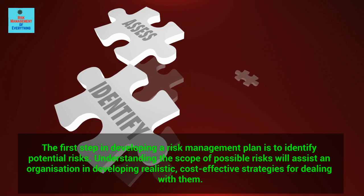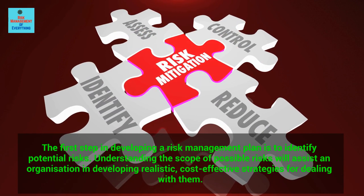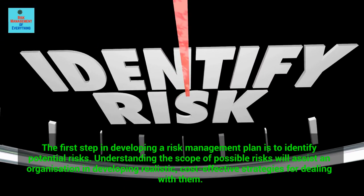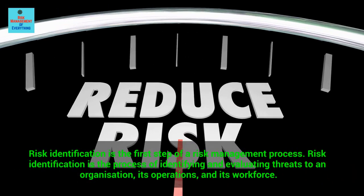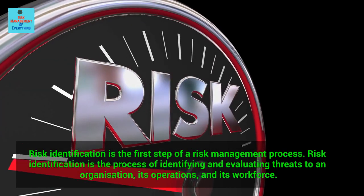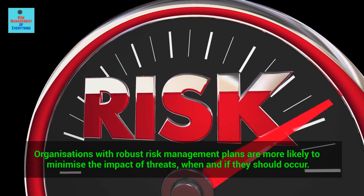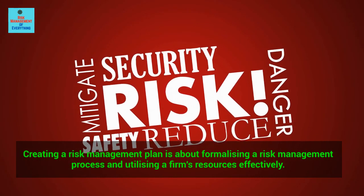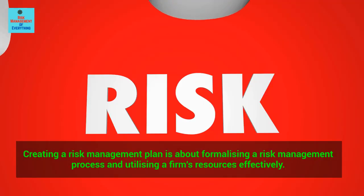The first step in developing a risk management plan is to identify potential risks. Understanding the scope of possible risks will assist an organization in developing realistic, cost-effective strategies for dealing with them. Risk identification is the first step of a risk management process — it involves identifying and evaluating threats to an organization, its operations, and its workforce. Organizations with robust risk management plans are more likely to minimize the impact of threats when they occur.